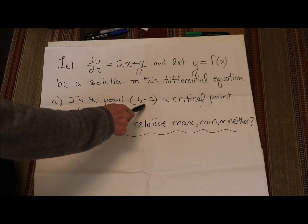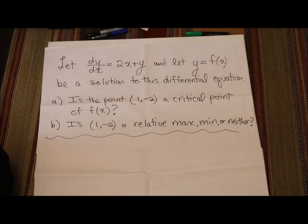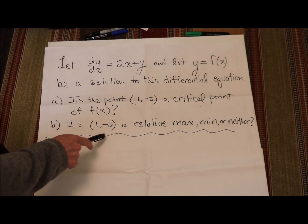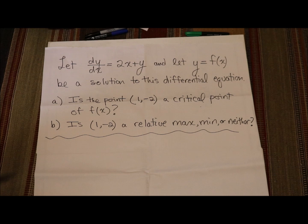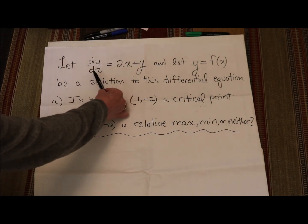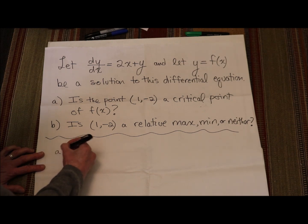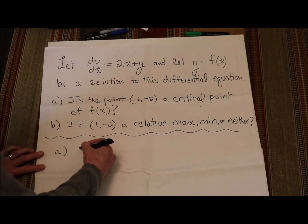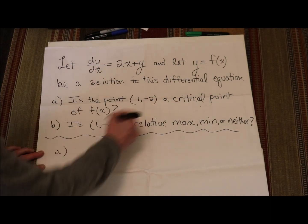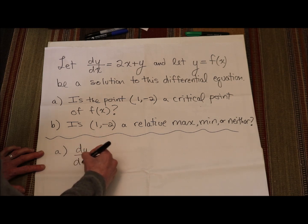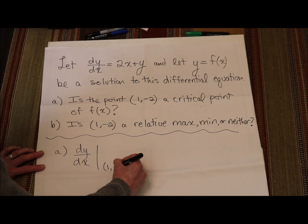Part a: Is the point (1, -2) a critical point of f of x? And part b: Is (1, -2) a relative max, min, or neither? To see if something is a critical point, we know that's the case when the derivative of a function is either equal to 0 or undefined. We basically just want to see if dy/dx equals 0 or is undefined at (1, -2). So let's figure out dy/dx evaluated at (1, -2).